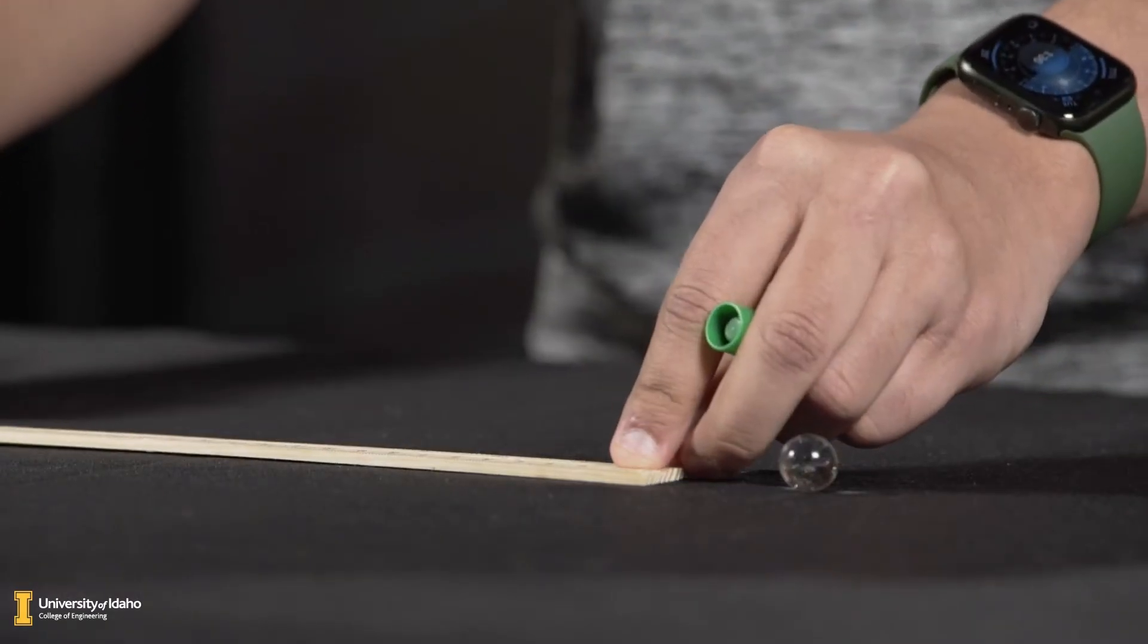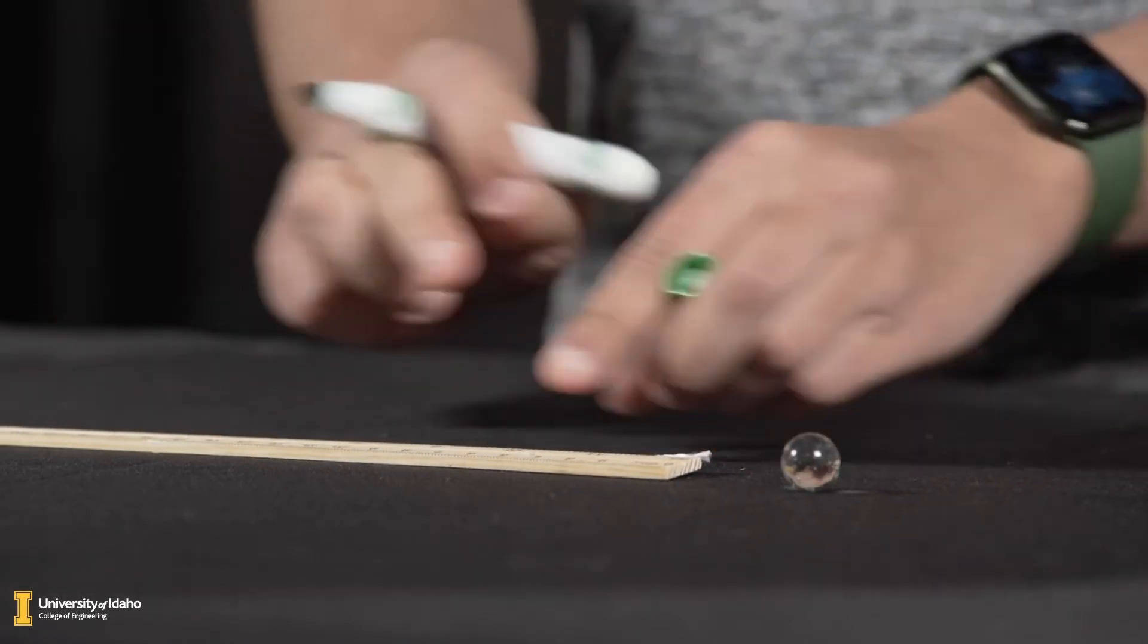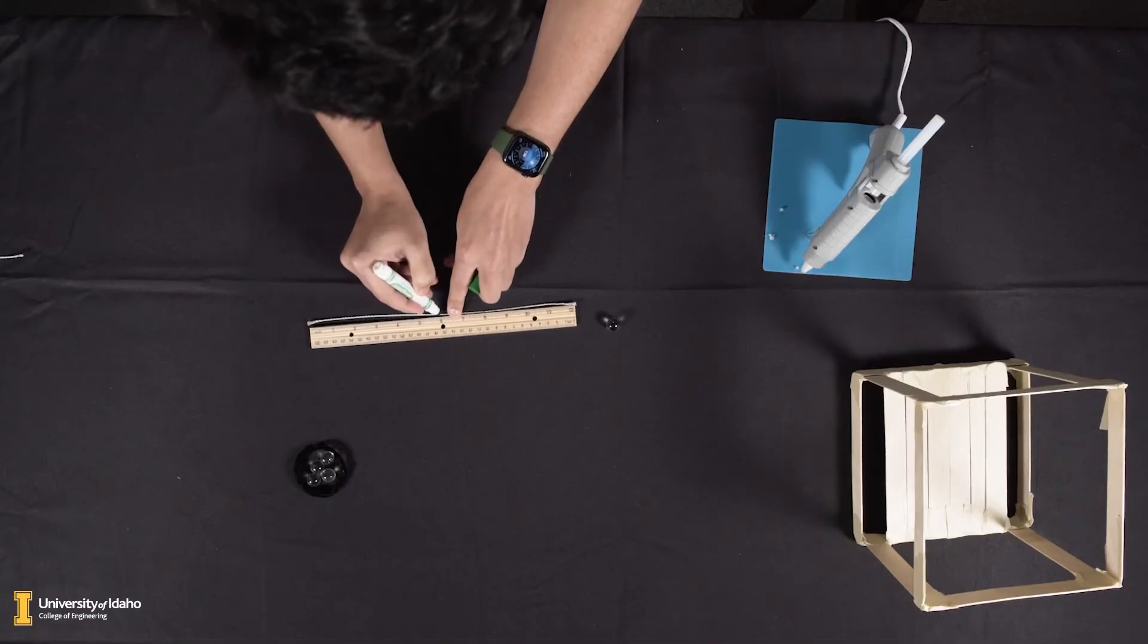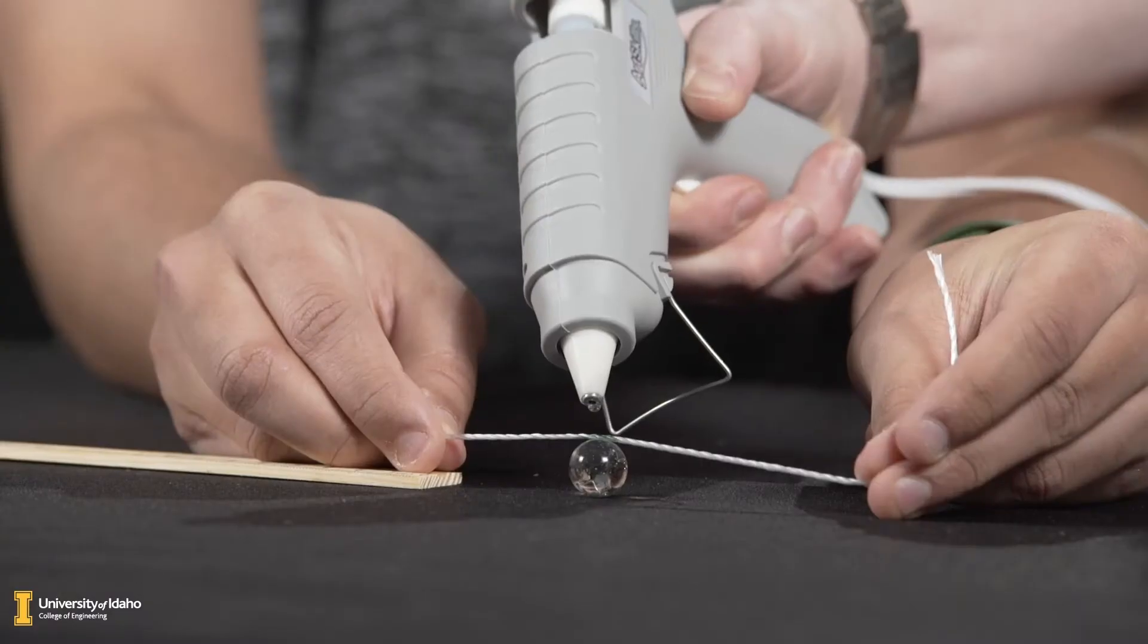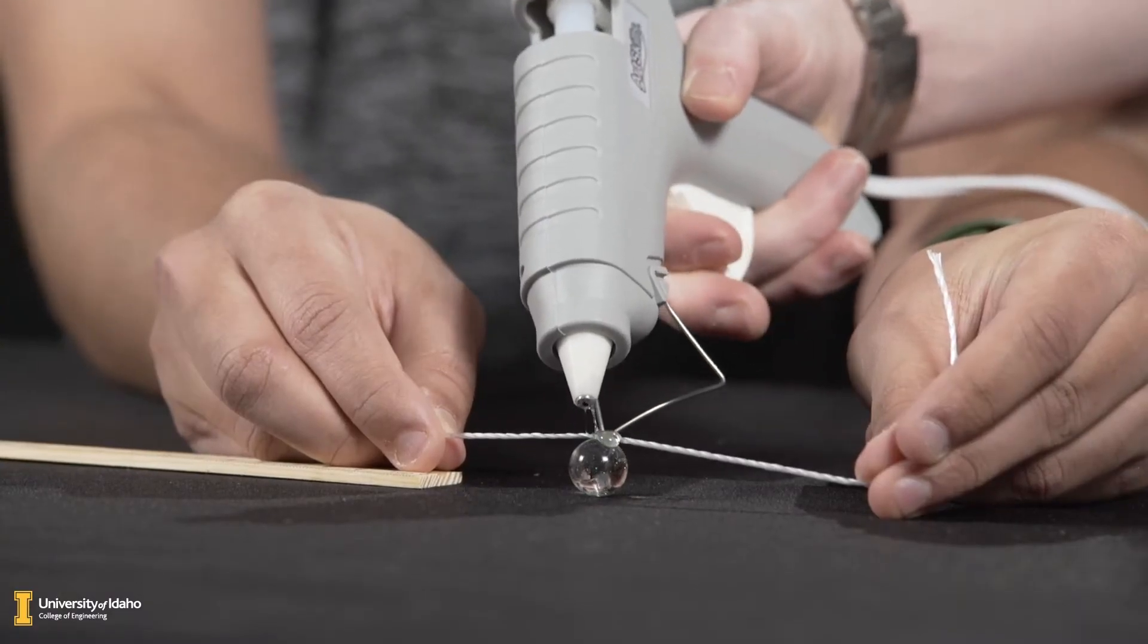Attach one marble to each string in the center of the string. Using your ruler, mark the center of the string and be as accurate as possible. Use either hot glue or tape to attach the marble to your center.